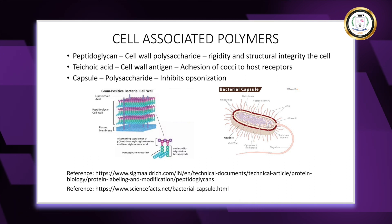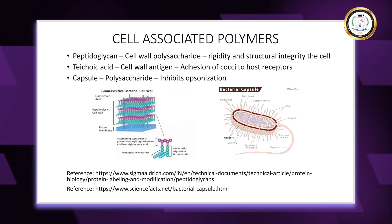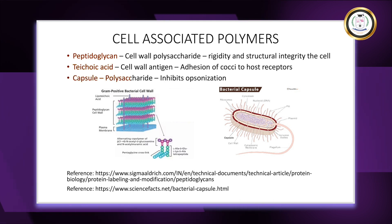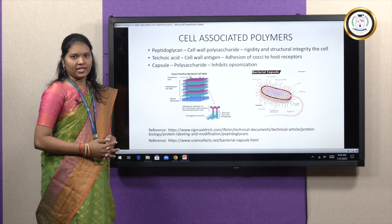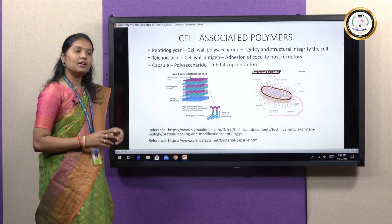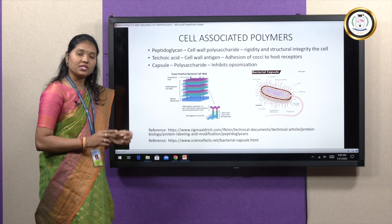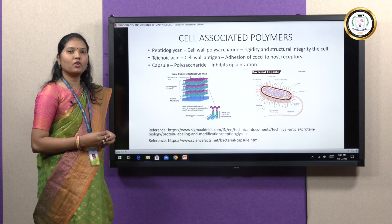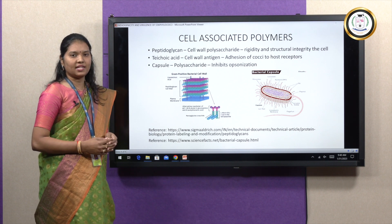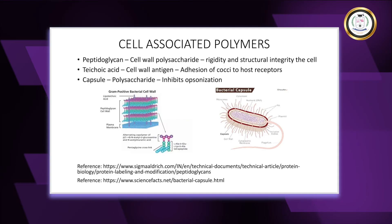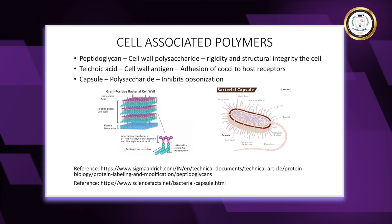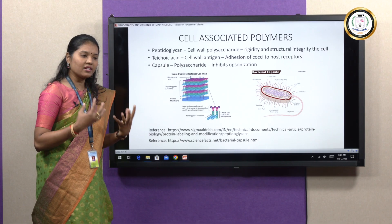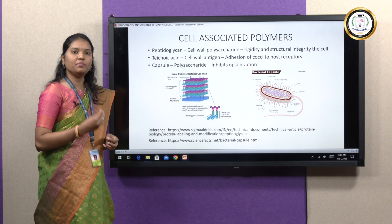The cell-associated polymers include three types: peptidoglycan, teichoic acid, and capsular polysaccharides. Peptidoglycan and teichoic acid are the two major components of the gram-positive bacterial cell wall. Peptidoglycan is a substance made up of a co-polymer of NAG (N-acetylglucosamine) and NAM (N-acetylmuramic acid). Peptidoglycan confers rigidity and integrity to the gram-positive bacterial cell wall, thereby protecting the bacterium from harsh attacks of the host's immune system.